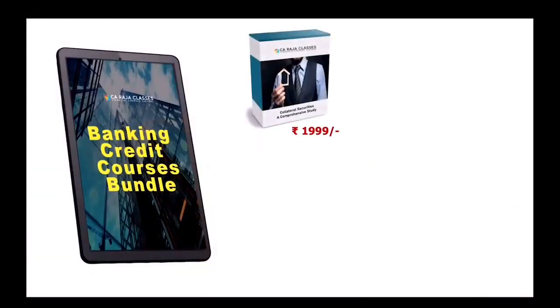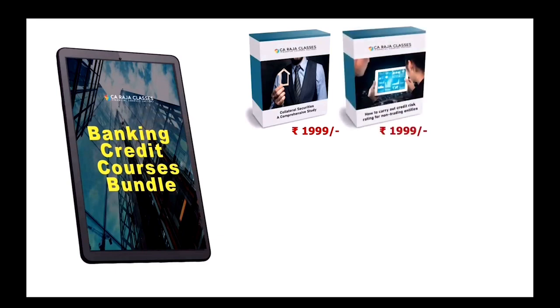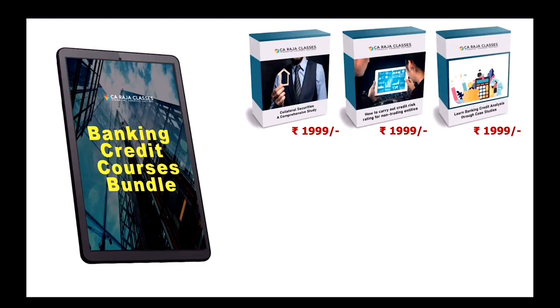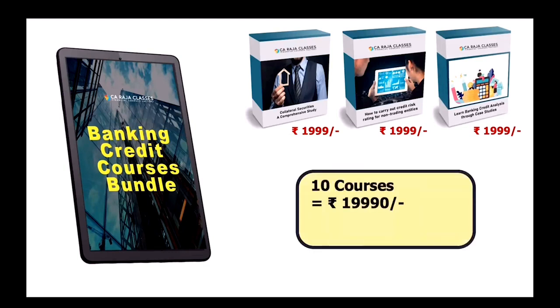I'm going to give you some more bonus. Course number eight, collateral security is a comprehensive study. Course nine, how to carry out credit risk rating for non-trading entities. Course number 10, in this course, you will learn banking credit analysis through various case studies. So now it is 10 courses of value close to 20,000, but you are going to pay only 2599. It is not yet over.